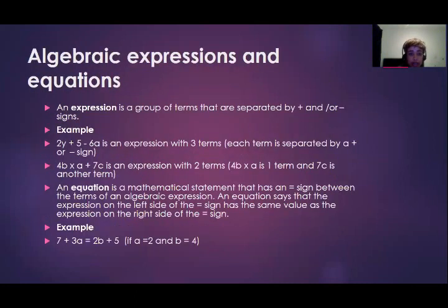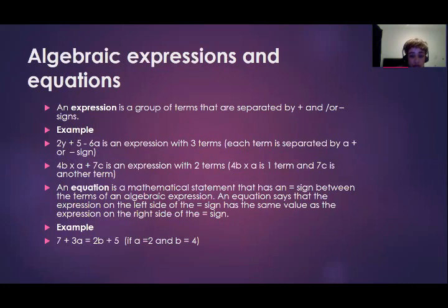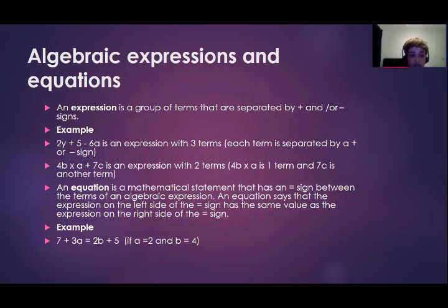Looking at algebraic expressions and equations, it is very important you understand these two terms and how they differ. An expression is a group of terms separated by a plus and/or minus sign. For example, 2y plus 5 minus 6a is an expression — note there is no equal sign. There are three terms: 2y is one term, 5 is another, and 6a is another. Another example: 4b times a plus 7c is an expression with two terms. 4b times a can also be written as 4ab — that is one term — and 7c is the other.